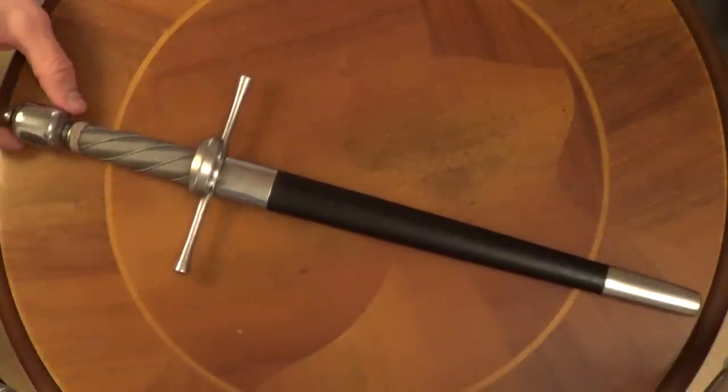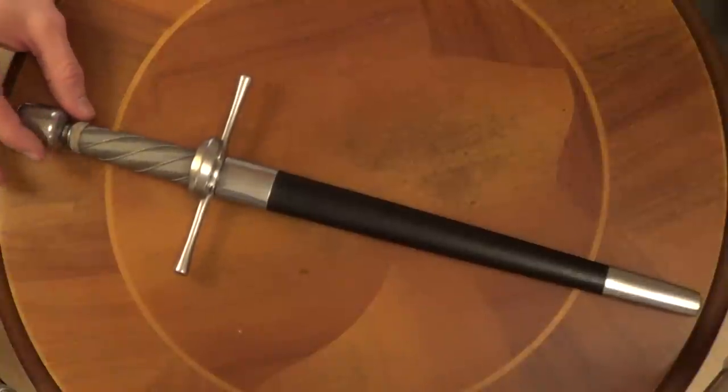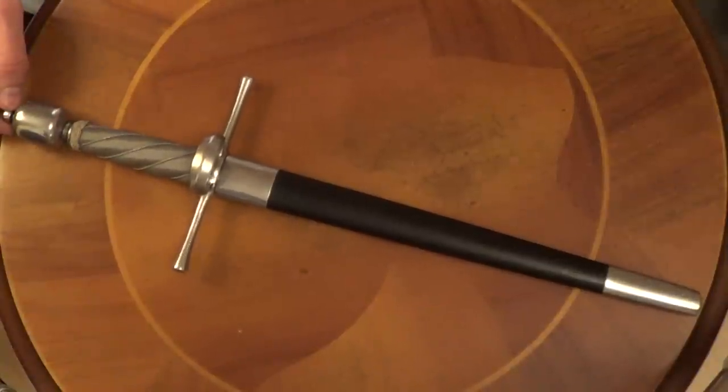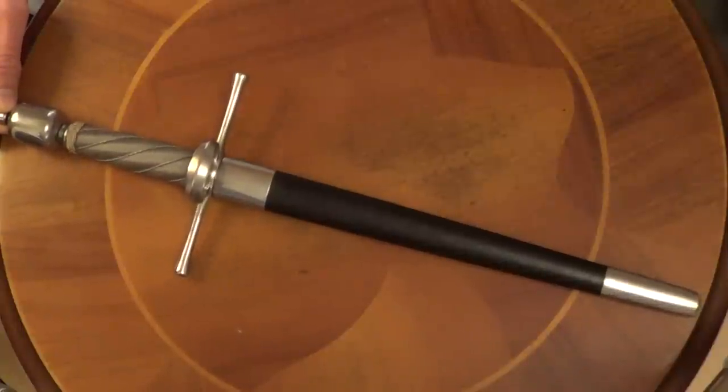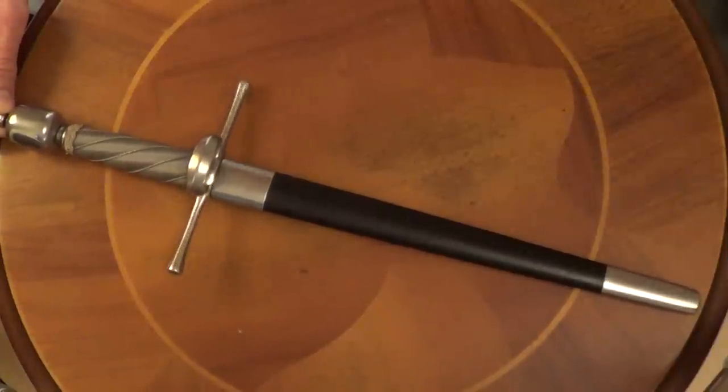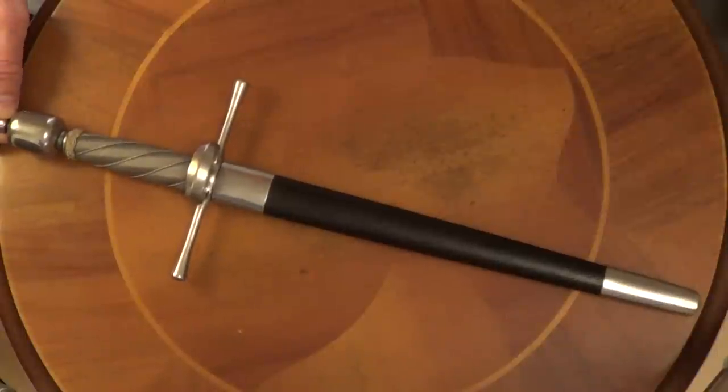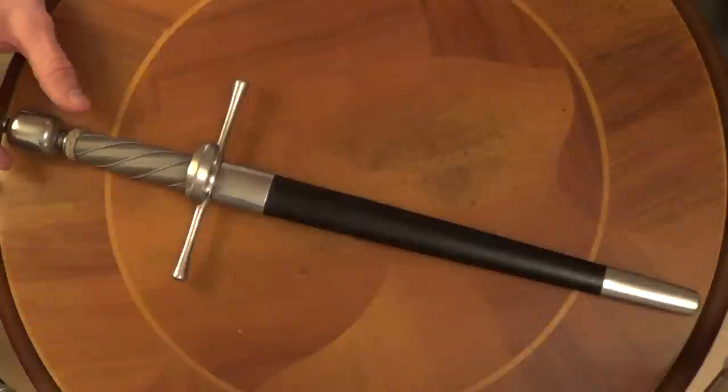But this particular one is not a practice weapon by any stretch of the imagination because it is more or less sharp. It's certainly got a sharp point and is not sold as a practice weapon. It's essentially a display piece but made to fairly robust standards so that you could blunt it and you could use it as a practice weapon I suppose. But I wouldn't recommend it because it's not really suited to any kind of fencing practice.